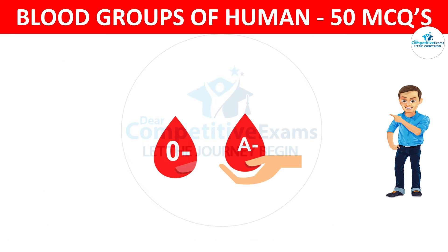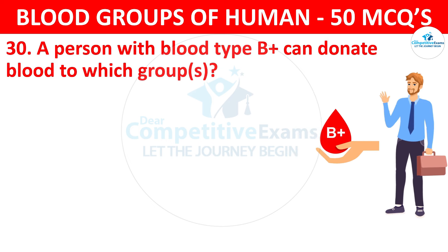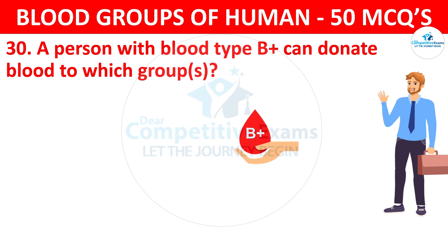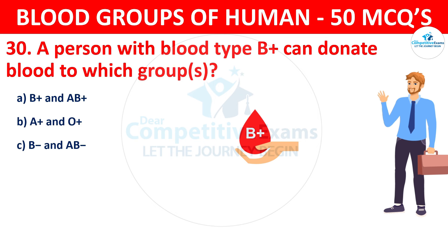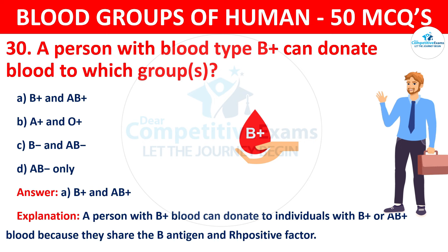Question 30: A person with blood type B positive can donate blood to which groups? The correct answer is A, B positive and AB positive groups. A person with B positive blood can donate to individuals with B positive or AB positive blood because they share the B antigen and RH positive factor.